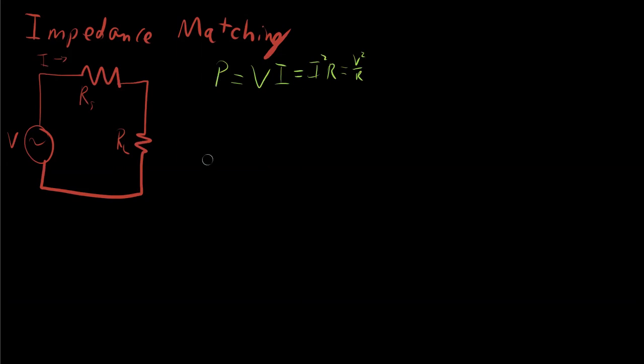Now, the issue of course, is that the current that's flowing is going to be different based on the resistance. And further, the voltage drop across the resistance relative to the load resistance versus the source resistance is also going to be different.